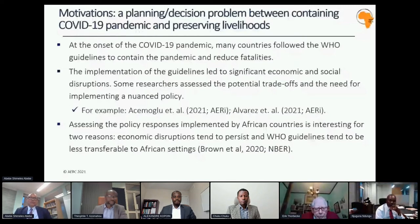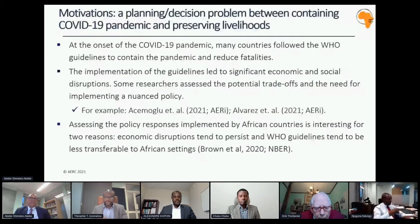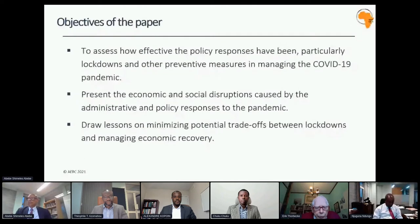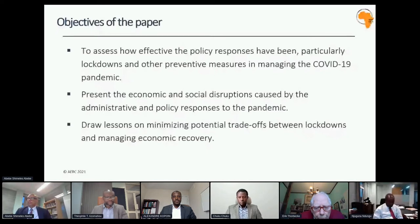Social distancing is difficult because people don't have enough rooms to share — if somebody is sick, you cannot isolate. Many people don't have access to information, TV, et cetera. With this in mind, we asked ourselves in this paper how effective the policy response has been, particularly lockdowns and other preventive measures. We also present in the paper the economic and social disruptions, and we want to draw lessons on minimizing potential trade-offs. Why focus on Africa? Two reasons: first, shocks tend to persist — African economies are not as resilient as developed countries. Second, there is the issue of whether African governments have the fiscal capacity and institutional ability to turn COVID-19 from a challenge into an opportunity.